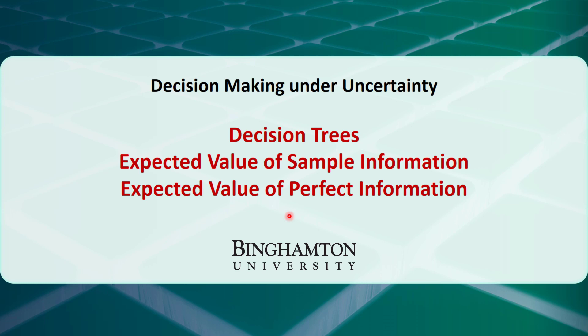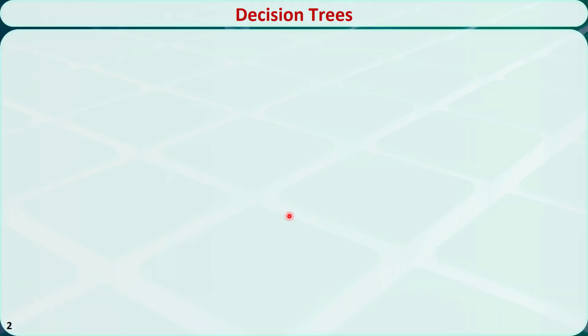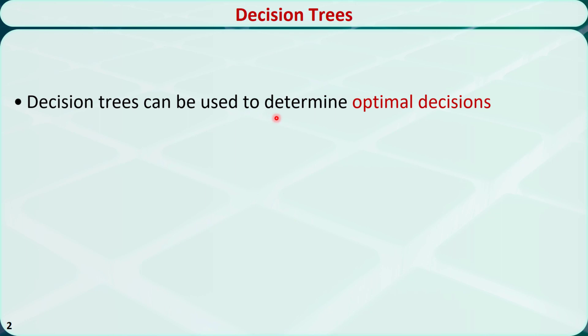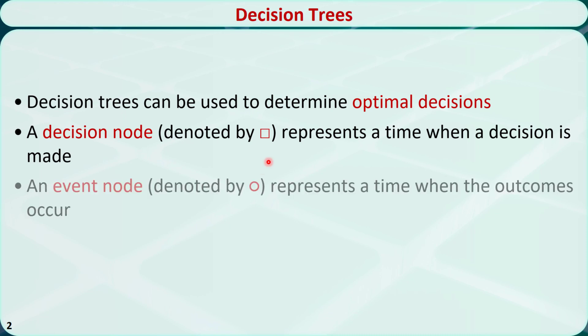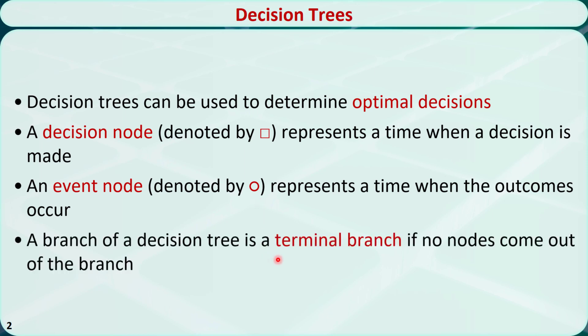A lot of uncertainties may be associated with the business decision-making process. Under such circumstances, we can use a tool called the decision tree to help us make the optimal decisions. In a decision tree, a decision node is denoted by a square — it represents a time when a decision is made. An event node is denoted by a circle — it represents a time when the outcomes occur. A branch of a decision tree is a terminal branch if no decision nodes or event nodes come out of it.